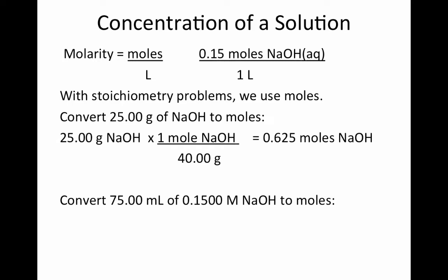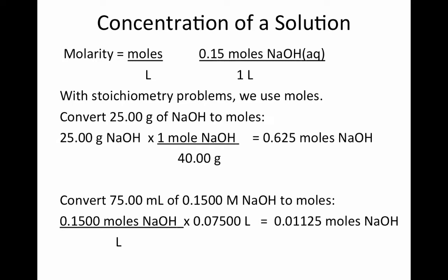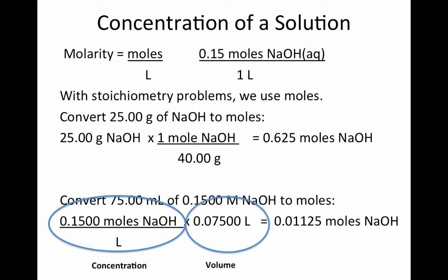What about concentration? We are asked to convert 75 mL of a 0.1500 molar sodium hydroxide solution to moles. A 0.1500 molar sodium hydroxide solution — looking at the definition — gives us 0.1500 moles of sodium hydroxide for every 1 liter of solution. We don't have 1 liter; we have 75 milliliters, so that is converted to liters, and we can then determine the number of moles. What we're doing is combining concentration in molarity times volume in liters to get number of moles.